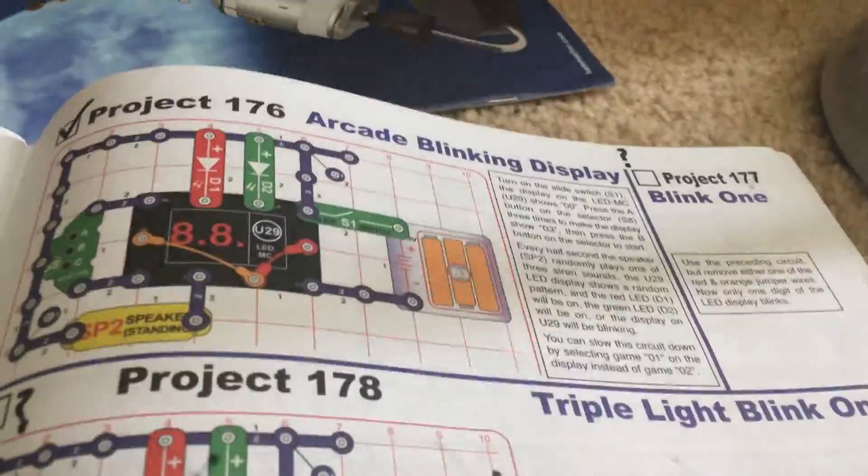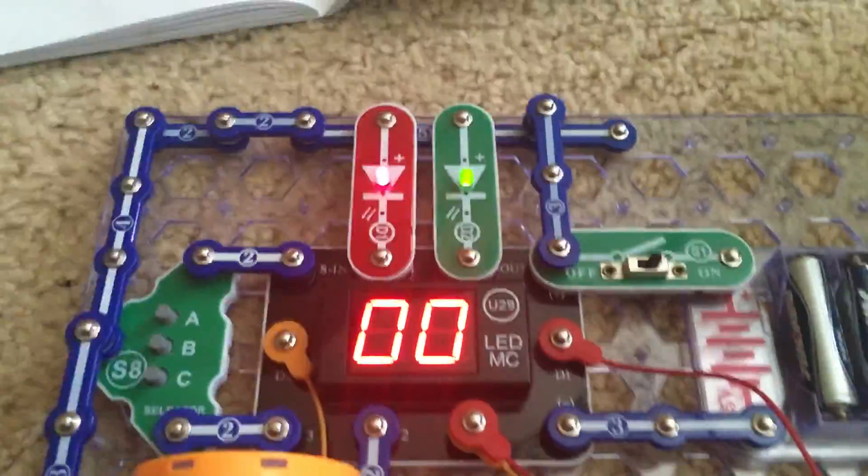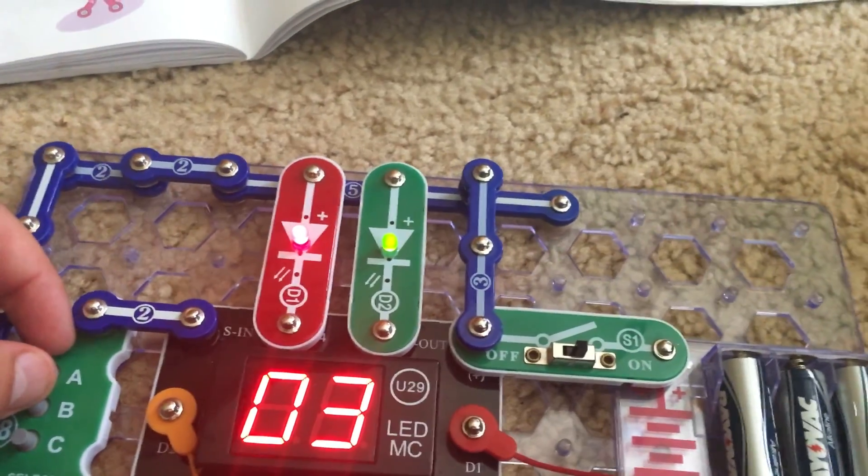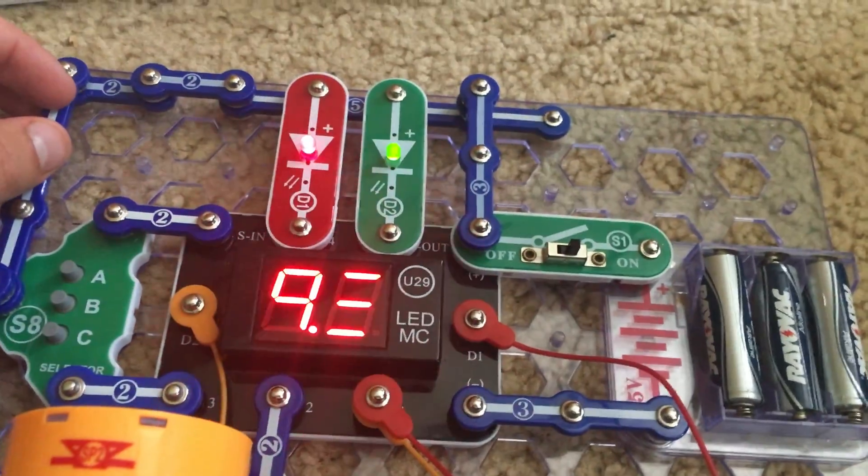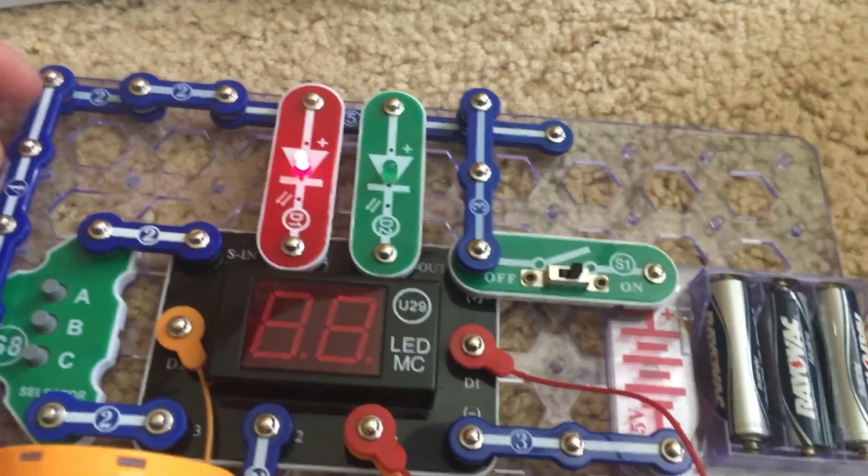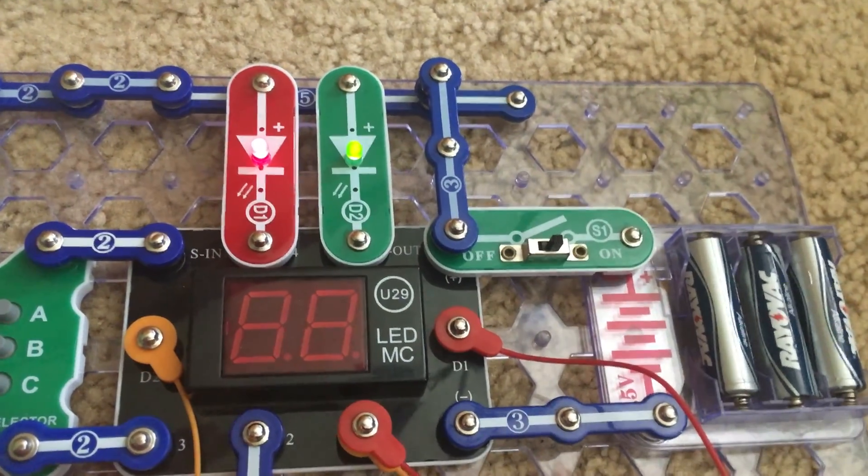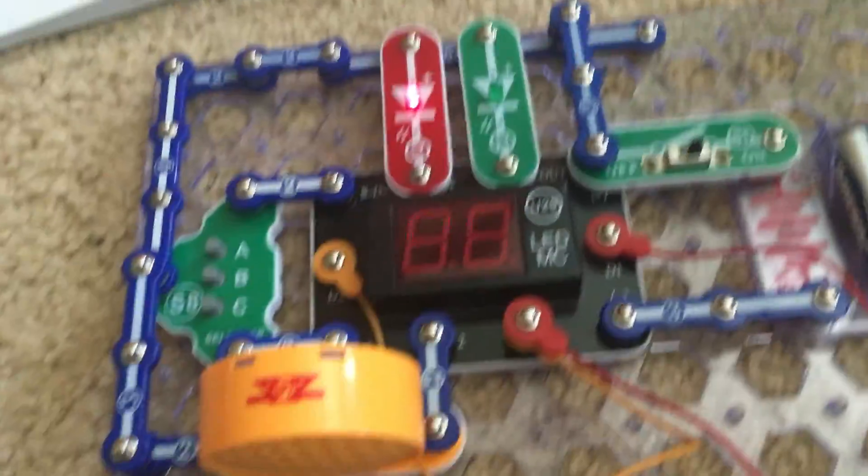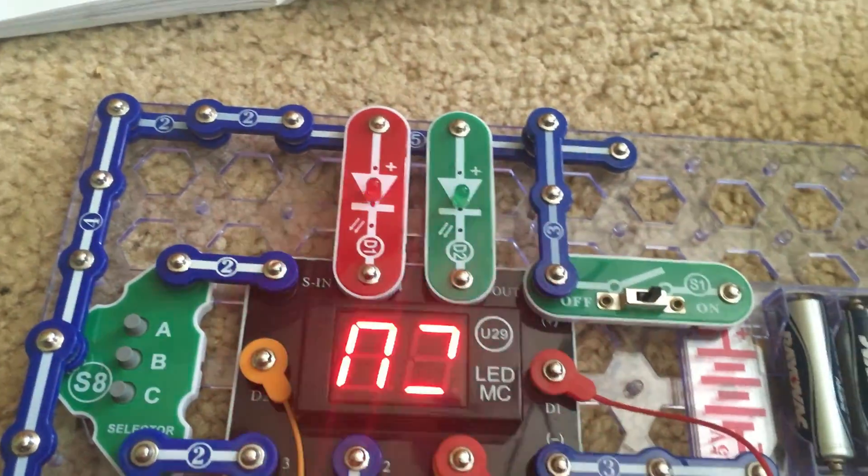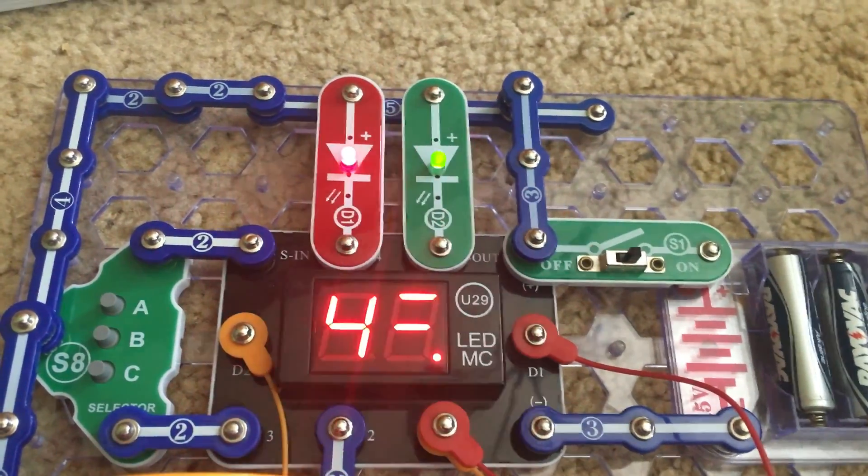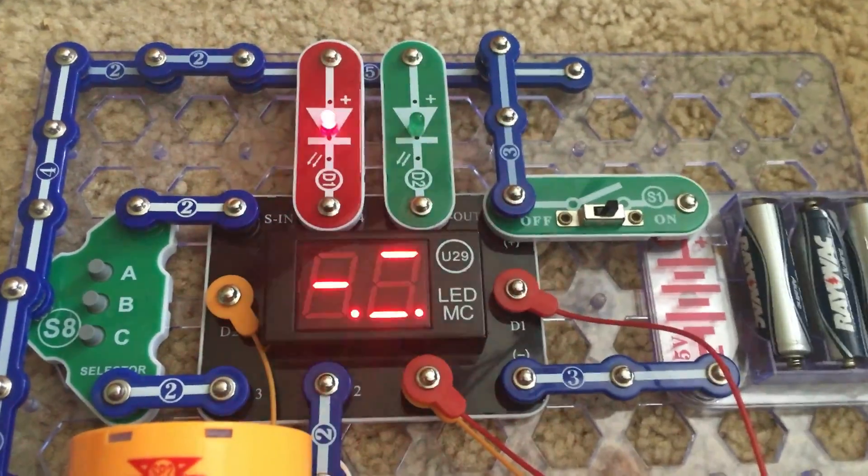Project 176 is called arcade blinking display. We will turn on the slide switch and select game 3. You could select game 1 or 2 if you want the patterns to switch at a slow rate, but I am going to just do game 3. As you can see the LEDs flash and the U29 display changes as well as the speaker making random noises every few seconds. But can you notice that the U29 display is blinking? Both digits are flashing at a steady rate even though the patterns are completely random.